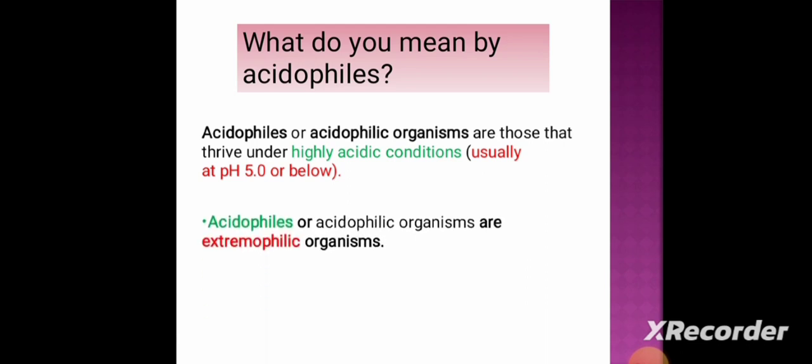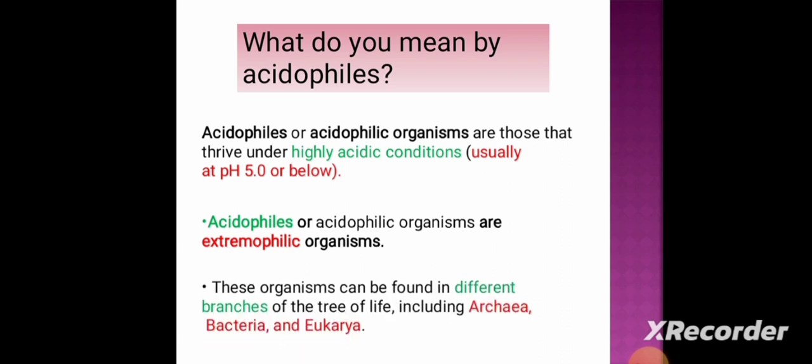Acidophiles or acidophilic organisms are extremophilic organisms. These organisms can be found in different branches of the tree of life, including the Archaea, Bacteria, and Eukarya.